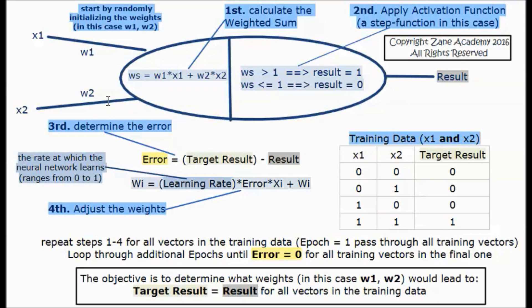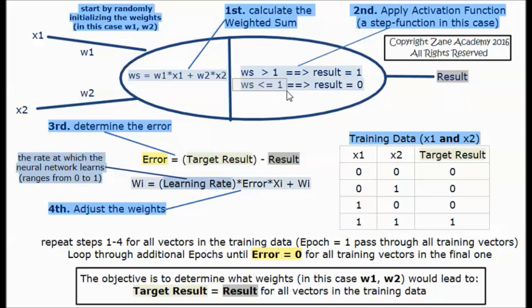We have two weights, w1 and w2, and after that we will go into a loop where we first calculate the weighted sum — ws equals w1 times x1 plus w2 times x2. Second, we will apply an activation function; in this case we are using a step function, so if the resulting ws is bigger than 1 then the result equals 1.